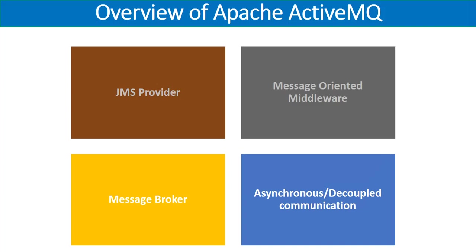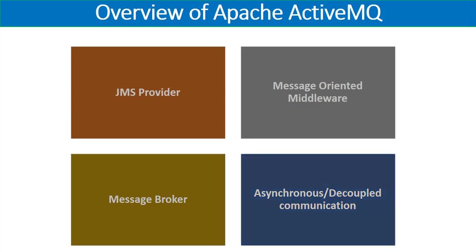When we talk about Apache ActiveMQ, it is a message-oriented middleware, meaning it acts as a middleware or message broker — these two terms can be used as synonyms. It acts as a broker between the producers and consumers of messages. All information transferred from producers to consumers using these message brokers is in the form of messages. Apache ActiveMQ fully supports asynchronous, loosely coupled, or decoupled communication.